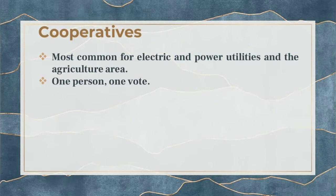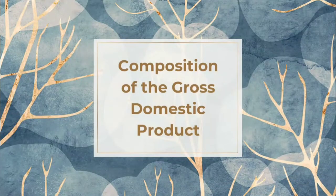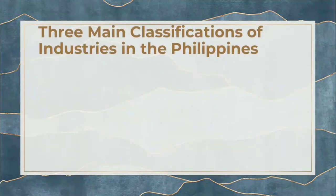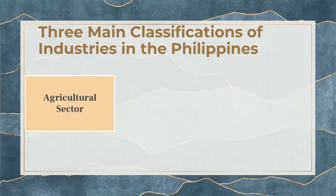Cooperatives are most common in the electric and power utilities sector and in the agricultural area — one person, one vote. There are three main classifications of industries in the Philippines: the agricultural sector, the industry sector, and the service sector.